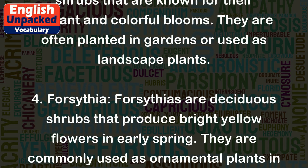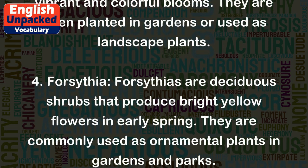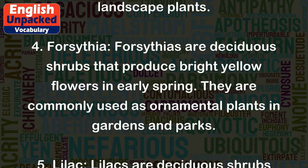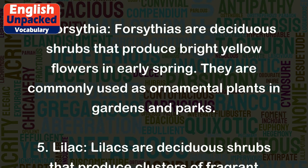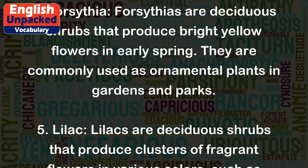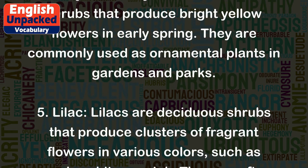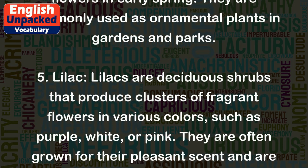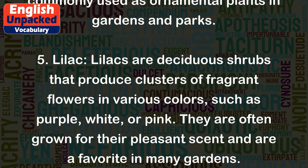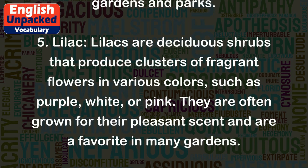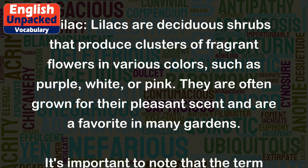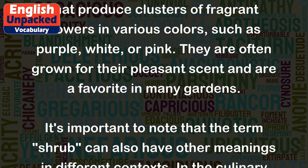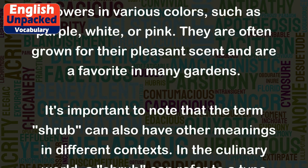4. Forsythia. Forsythias are deciduous shrubs that produce bright yellow flowers in early spring. They are commonly used as ornamental plants in gardens and parks. 5. Lilac. Lilacs are deciduous shrubs that produce clusters of fragrant flowers in various colors, such as purple, white, or pink. They are often grown for their pleasant scent and are a favorite in many gardens.